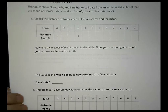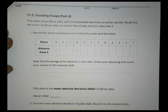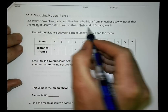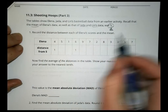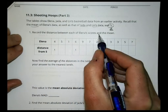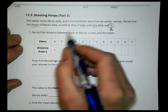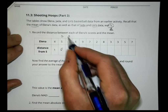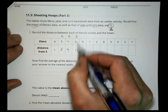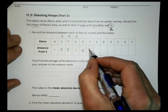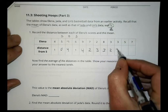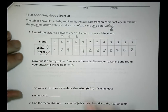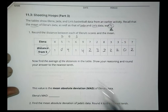Here we are in Activity 3, Shooting Hoops Part 3. The table shows Elena, Jada, and Lynn's basketball data. Recall that the mean for all three was 5. We need to record the distances between each of Elena's scores and the mean. The mean was 5, so the distance between 4 and 5 is 1, between 5 and 5 is 0, between 1 and 5 the distance is 4, between 6 and 5 is 1, and so on. We have distances of 1, 0, 4, 1, 4, 2, 3, 3, 2, 2, 0, and 2. We're not worrying about positive or negative — just the distance from 5.